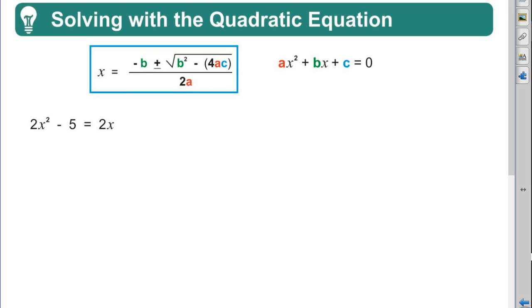So what am I going to do? I'm going to add negative 2x to both sides. So 2x squared minus 2x minus 5 equals zero. And now I'm ready to do the quadratic equation.